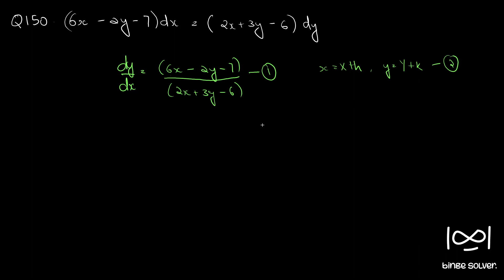Now for this solution to work, we have to make sure that the ratio of the coefficient of x in the numerator to denominator is not equal to the ratio of the coefficient of y in the numerator to denominator. Here it is 6 by 2 and minus 2 by 3, which are not equal, so we can apply the solution.